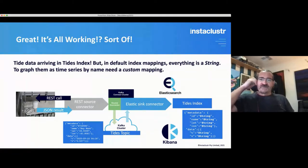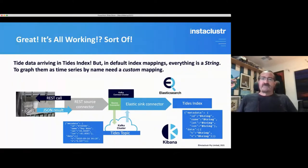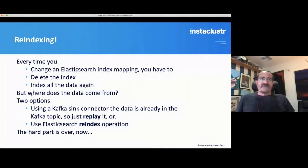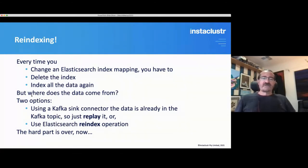That's all working — well, sort of. It would be a short talk if that were the end of the story. The TIDES data is arriving successfully in the TIDES index in Elasticsearch, but because we use default index mappings, everything is just a string. If you want to graph them as a time series by name, you need a custom mapping. Basically, we need to specify that field T is a date, V is a double, and name is a keyword. Also, every time you change an Elasticsearch index mapping, you have to delete the index and re-index all the data again — but the data is already in the Kafka topic, so you can just replay it.